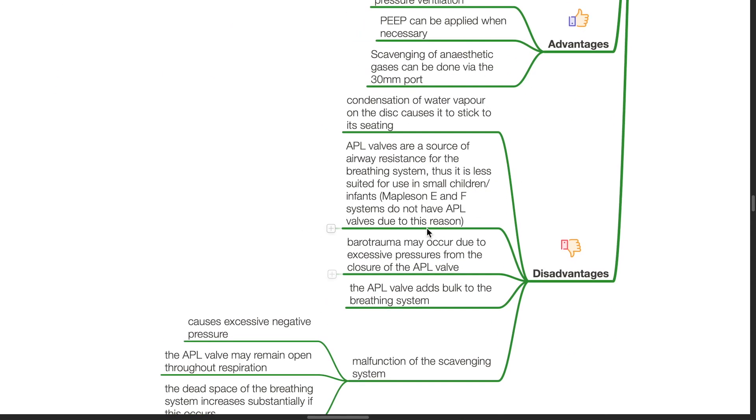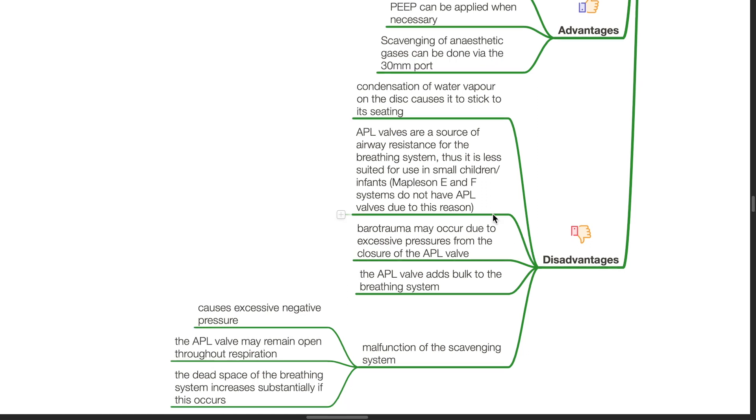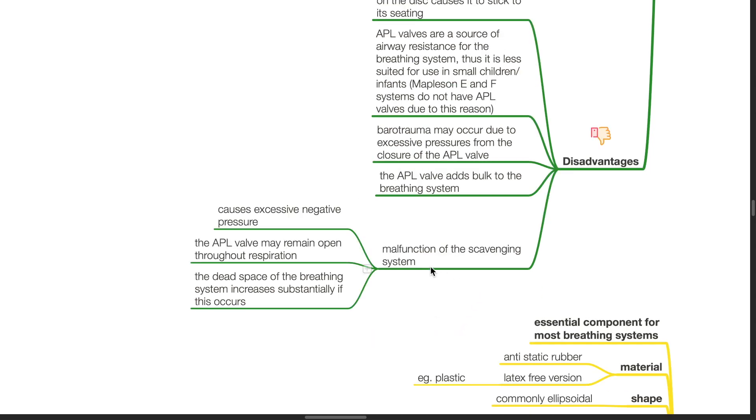Disadvantages. Condensation of water vapour on the disc causes it to stick to its seating. APL valves are a source of airway resistance for the breathing system. Thus it is less suited for use in small children or infants. Mapleson E and F systems do not have APL valves due to this reason. Barotrauma may occur due to excessive pressures from the closure of the APL valve. The APL valve adds bulk to the breathing system. Malfunction of the scavenging system causes excessive negative pressure. The APL valve may remain open throughout respiration. The dead space of the breathing system increases substantially if this occurs.